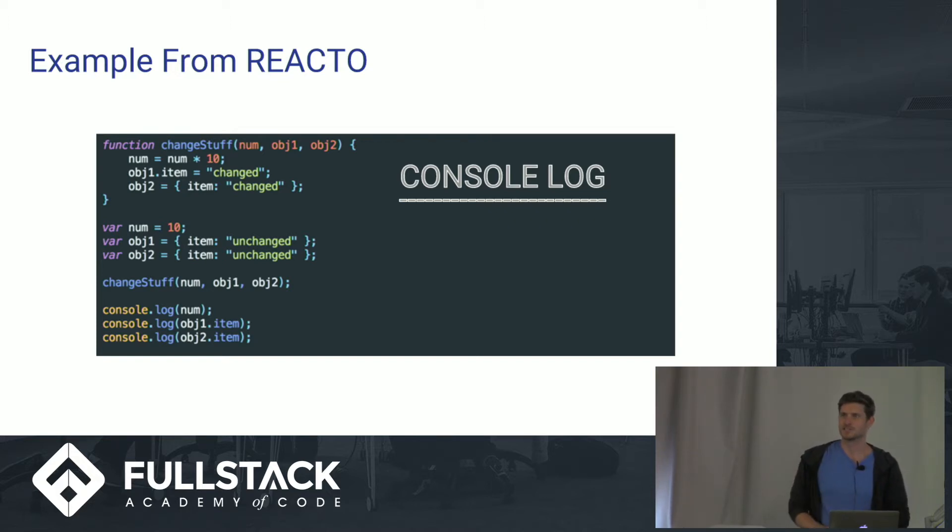So to kind of jog your memories of what we were doing last week, first we declared three numbers here in the center. We had num, object 1, and object 2. We were setting num equal to 10, and we were setting object 1 and 2 equal to objects with an item property set to unchanged.